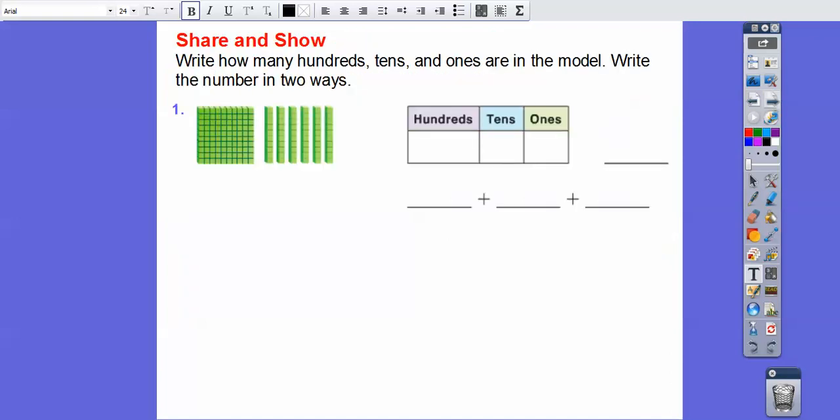All right, let's try that with this one here. So here we have 1 hundred block and 1, 2, 3, 4, 5, I think 6 ten blocks. So if we counted them right, yeah. So 1 hundred block is 100. 6 ten blocks is 60. And there's no ones. There's 0 ones. So we're going to go ahead and put a 0 in there and it represents 160.